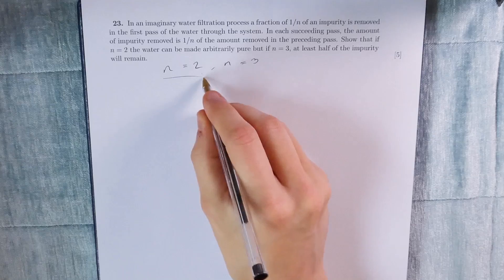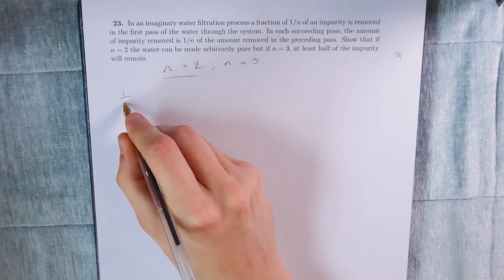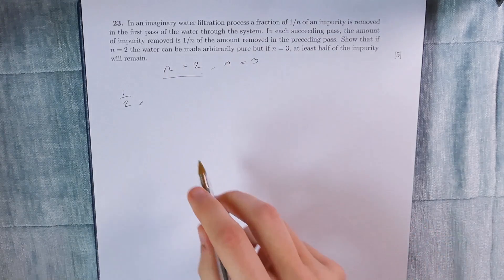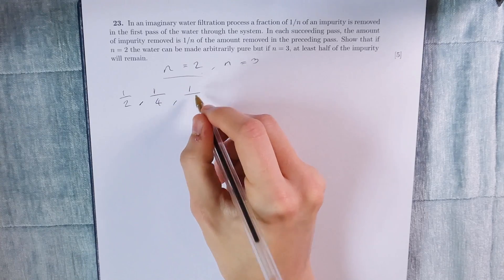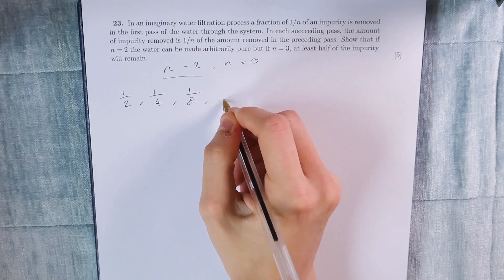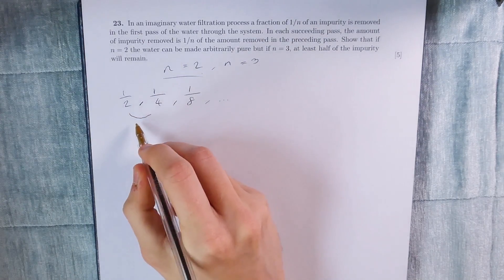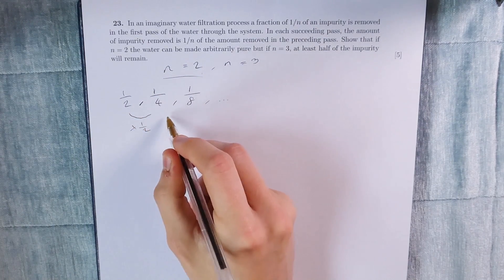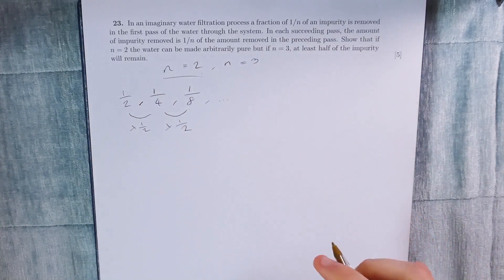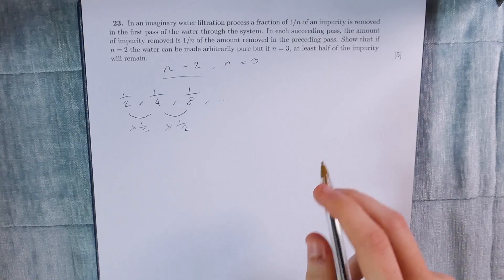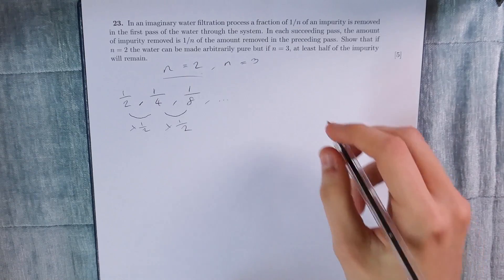Let's consider the case where n is equal to 2 first. In our first pass, we remove half of the impurity. In our second pass, we remove half of that half, so that would be 1 quarter. In our third, we remove half of that quarter: 1 eighth, and so on. What you might notice is that these terms actually follow a geometric series — they're all multiplying by the same scalar factor, which is half. Ultimately, we want to find the sum of the fraction of impurities removed, and there are some formulae we can use for the sum of a geometric series.